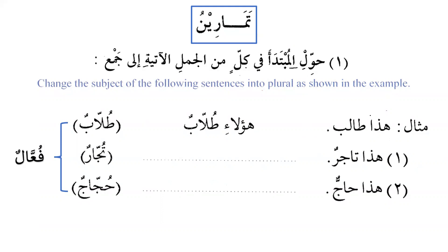The example is: هذا طالب — this is a student. We change the subject هذا into هؤلاء (plural demonstrative). Since the subject is plural, the predicate must be plural as well. So it becomes هؤلاء طلاب — these are students. The plural طلاب follows the broken plural pattern فُعَّال.